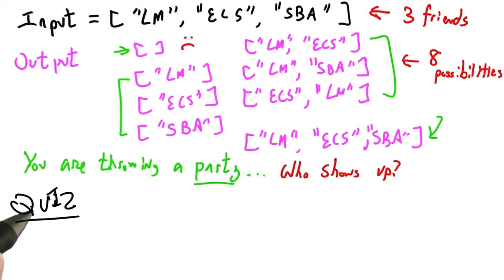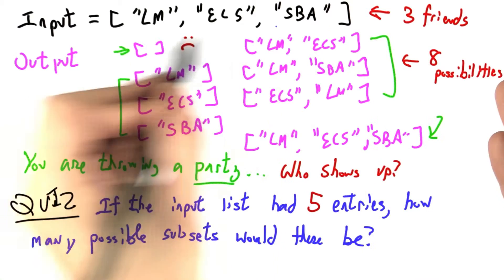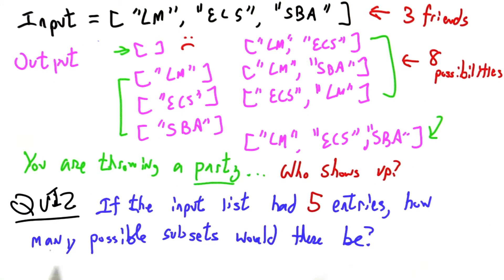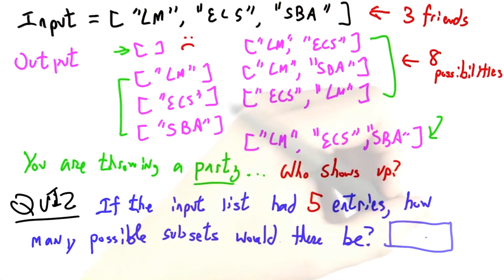Totally optional quiz that does not count for your grade. If the input list had five entries, if you invited five friends to your dinner party, how many possible subsets or arrangements, ranging from no one shows up to everyone shows up, would there be? Fill in the blank.